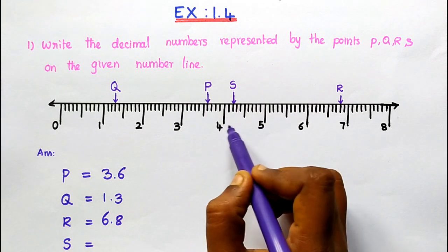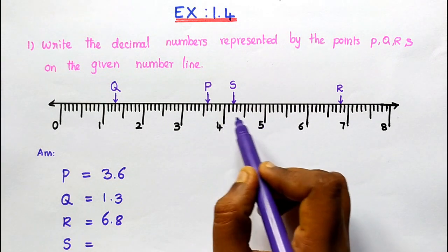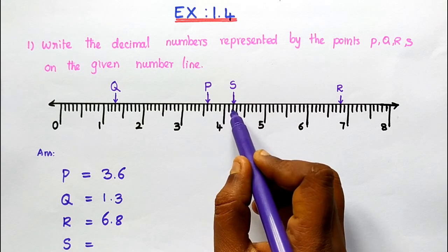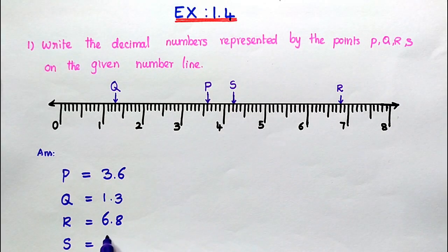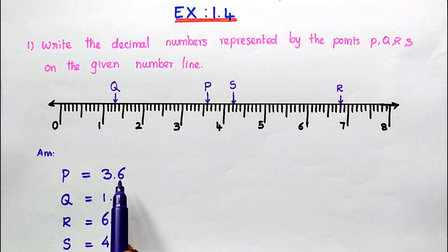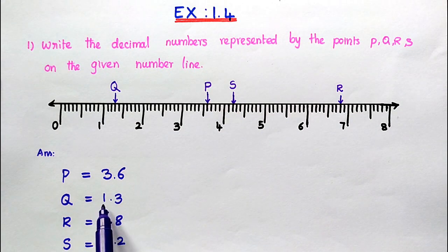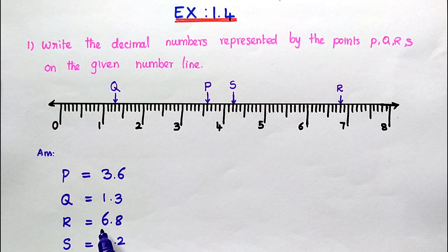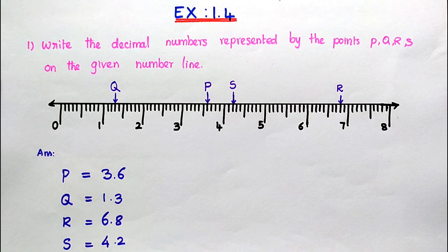S lies between 4 and 5: 4.1, 4.2. So the answers are: P lies between 3 and 4, Q lies between 1 and 2, R lies between 6 and 7, S lies between 4 and 5. That is the answer.